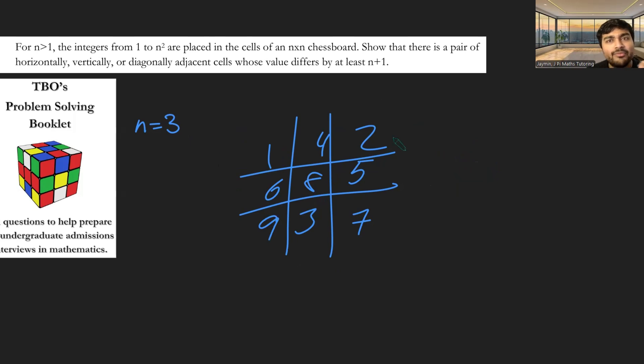And so here, n plus 1 would be 4. So I'm looking for a pair of digits which are 4 apart. In fact, there's a bunch of ways to do that. I got 8, 4 there. I got 8, 2, 8, 1, 7, 3. There may be some other 6, 1 there, 9, 3. So there's a bunch of ways to kind of get at least 4 apart.